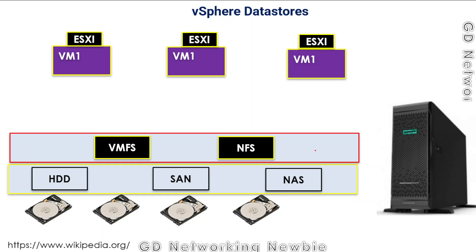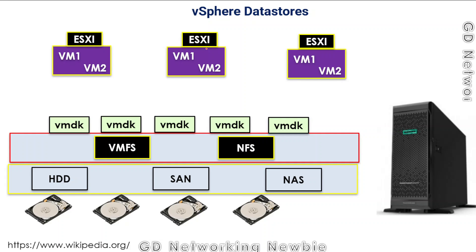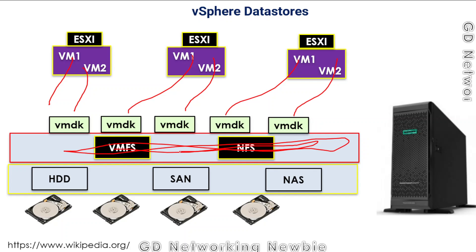On these ESXi hosts we can have single or multiple virtual machines. These virtual machines are stored using VMDK files. VMDK stands for VMware Virtual Machine Disk — they are just like hard disk drives in a computer, like the hard disk on my laptop. These VMDKs are saved on the datastore, and that datastore is made up of hard disk drives, directly attached storage, storage area network, or network attached storage.